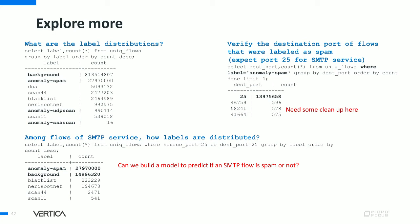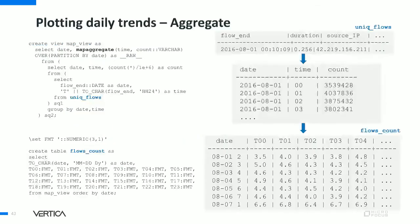We can verify the destination port of flows labeled as spam — expecting port 25 for SMTP. Port 25 has a very high count, but some other destination ports have very low counts. At this scale of analysis, those low-count records may not be needed, so as part of data cleaning we might want to remove them.